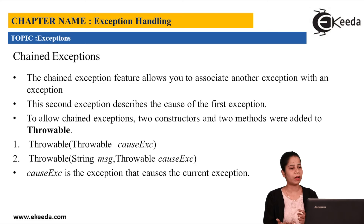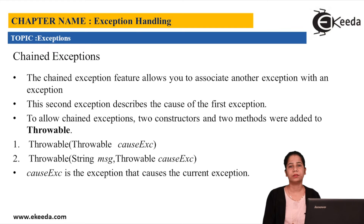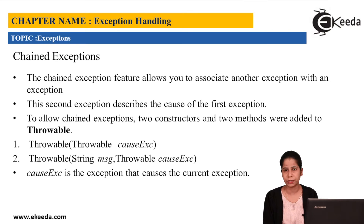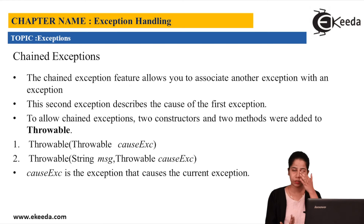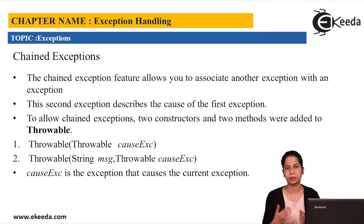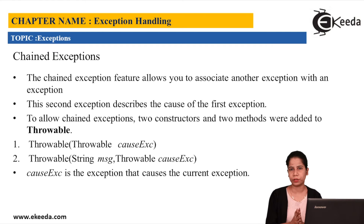So to deal with that, Java 1.4 onwards we got a feature and that is nothing but chained exceptions. For chain exceptions to be handled, basically in the Throwable class — we already know what the Throwable class is — we got two constructors: one is a normal default constructor and another one is a parameterized constructor. These two constructors we can actually use to get the chain exceptions. Apart from that, there are two methods which Throwable has given us: one is initCause and another one is getCause.